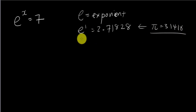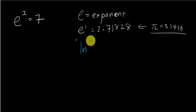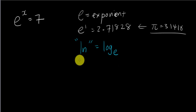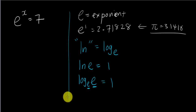Now in the log topic, how do you solve questions involving 'e'? When you see e^x equals something, you always need to use 'ln', which stands for natural log — it is log base e. We use ln because ln(e) equals 1, since log base e of e, where the base and the number are the same, always gives 1.